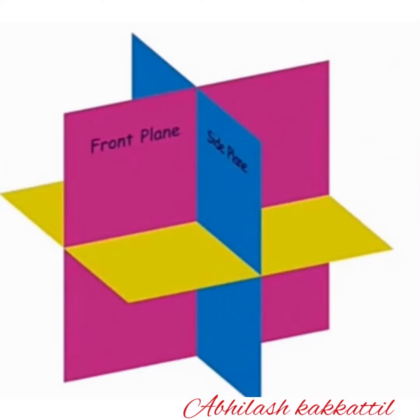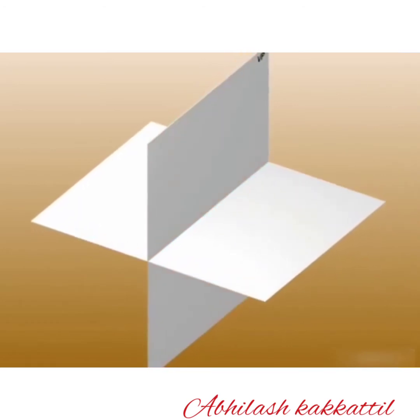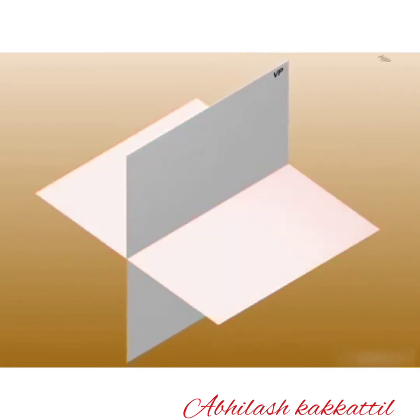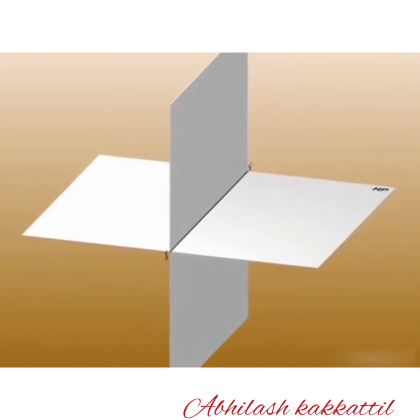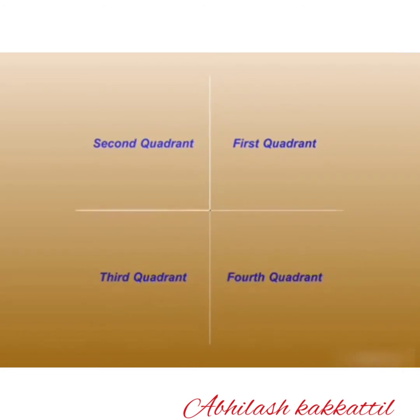The mutually perpendicular planes create four quadrants. This is the vertical plane VP and this is the horizontal plane HP. Their intersection line divides the space into four quadrants — the first, second, third, and fourth quadrants.